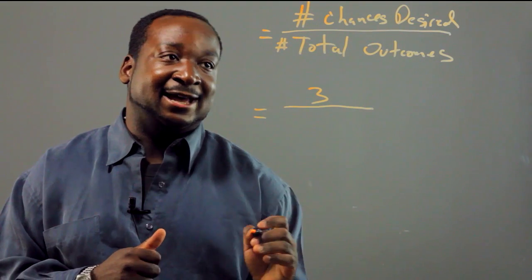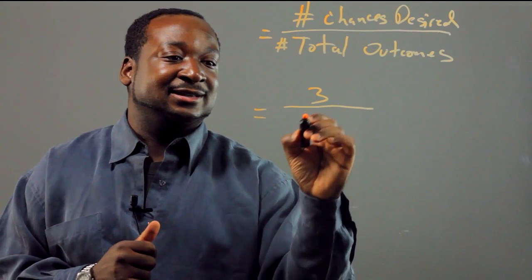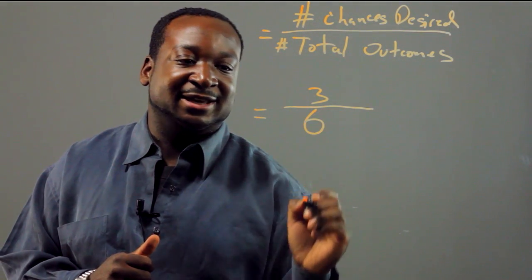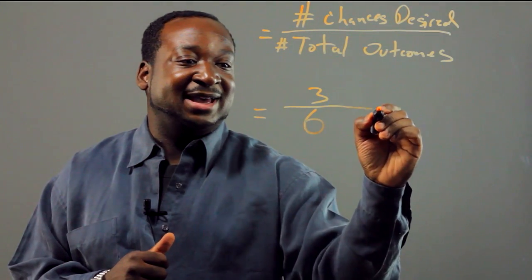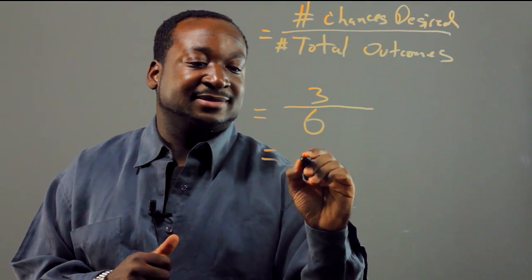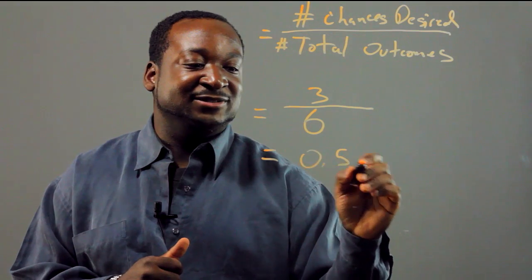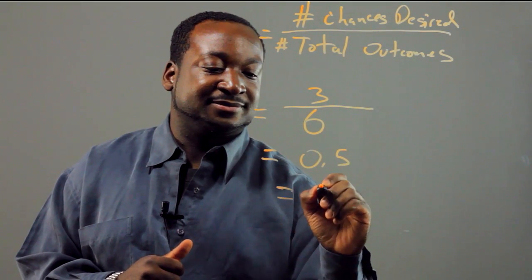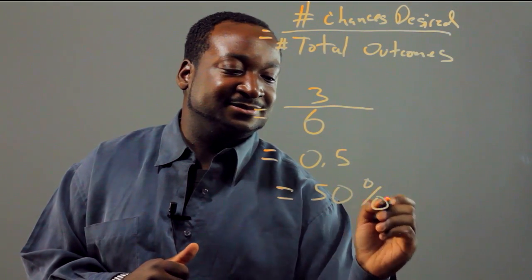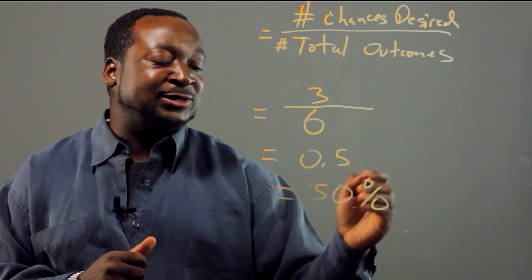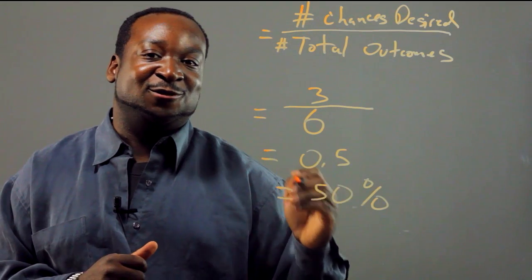A die has six sides, so the total number of outcomes is six. And we do the math, we get 0.5. And when we move the decimal place over two times, we get 50%. So we have a 50% chance that an even number will occur when we roll the dice.